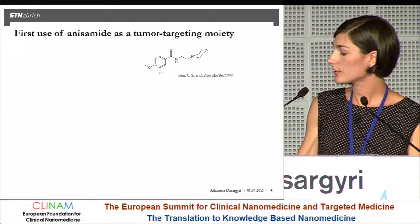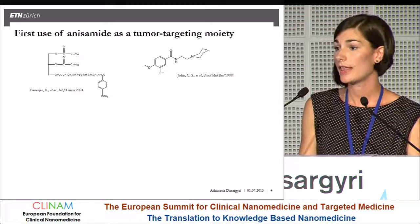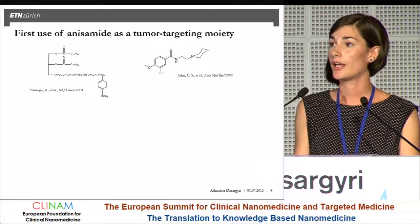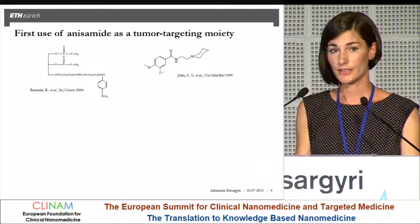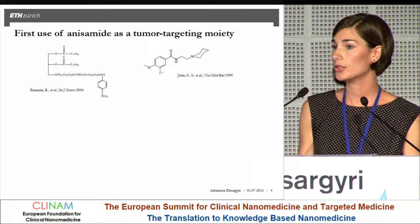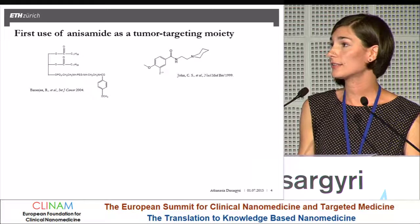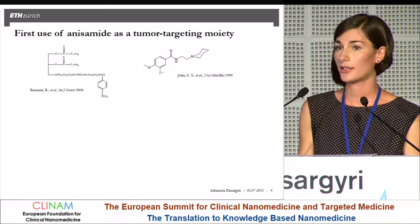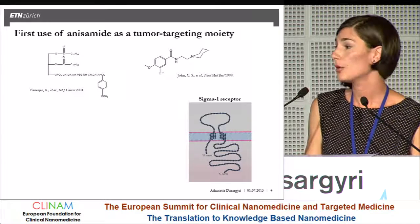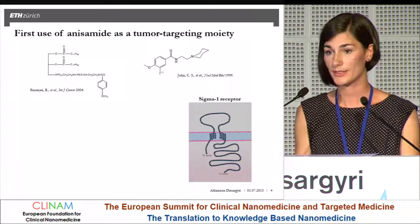Based on these molecules, the group of Professor Leif Huang 11 years ago first incorporated the methoxybenzamide structure, which they called anisamide, on a lipid-PEG conjugate and incorporated this conjugate on liposomes. These liposomes showed good tumor accumulation in a mouse model, and in that first publication the tumor targeting properties of anisamide were attributed to a receptor called the sigma-1 receptor, based on the binding of the iodobenzamide imaging agents to this receptor.